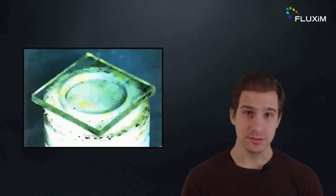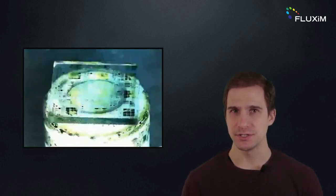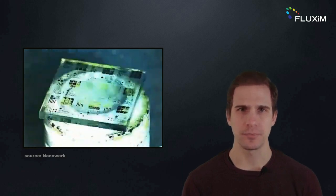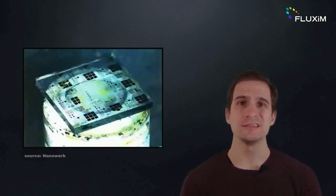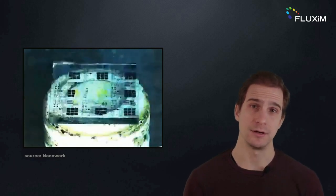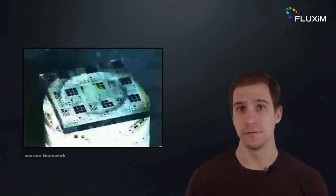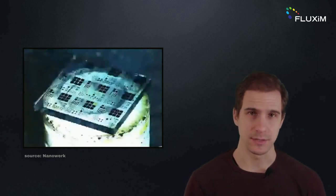spin coating perovskite on a textured surface leads to uneven deposition and a formation of holes. Possible solutions include reducing the texture size and depositing a thicker perovskite layer, or depositing the perovskite conformally to the texture of the silicon subcell.